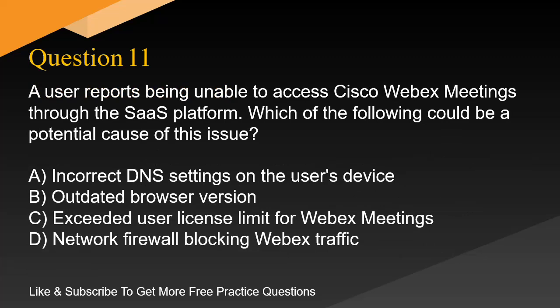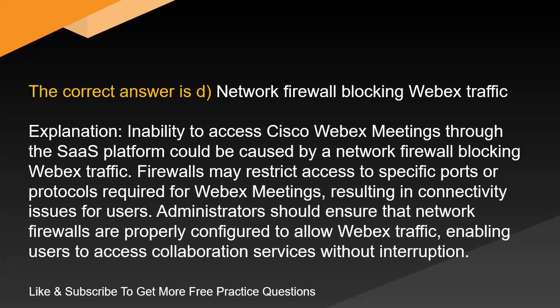Question 11. A user reports being unable to access Cisco Webex meetings through the SaaS platform. Which of the following could be a potential cause of this issue? A. Incorrect DNS settings on the user's device. B. Outdated browser version. C. Exceeded user license limit for Webex meetings. D. Network firewall blocking Webex traffic. The correct answer is D. Network firewall blocking Webex traffic. Inability to access Cisco Webex meetings through the SaaS platform could be caused by a network firewall blocking Webex traffic. Firewalls may restrict access to specific ports or protocols required for Webex meetings, resulting in connectivity issues for users. Administrators should ensure that network firewalls are properly configured to allow Webex traffic, enabling users to access collaboration services without interruption.